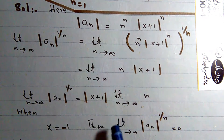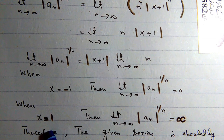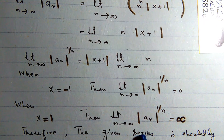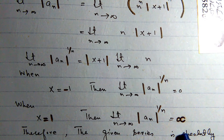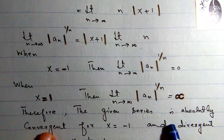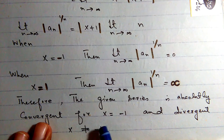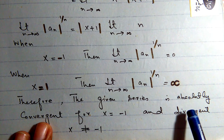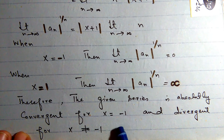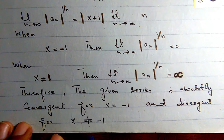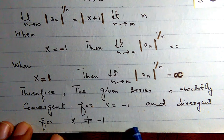When x = -1, the limit becomes 0 times something = 0, so the series converges absolutely. When x ≠ -1, the limit as n→∞ of n·|x+1| equals infinity, so the series diverges.